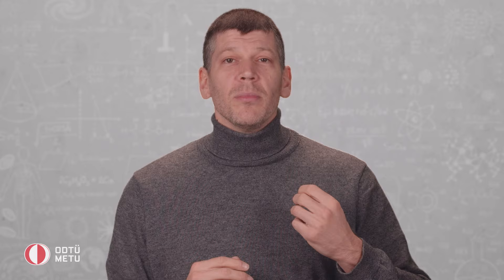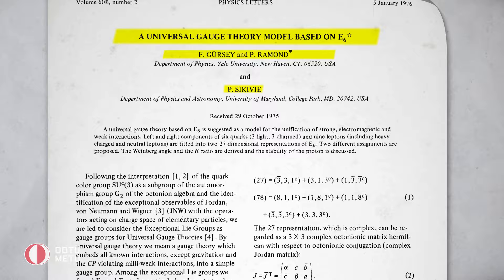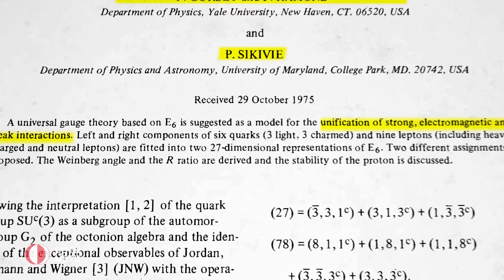In 1975, Gursey published another paper with his colleagues Ramon and Sikivi, in which they proposed the grand unified theory — or, in other words, a theory of everything — based on the exceptional group E-6. A major contribution of this paper was a step towards the construction of unified theories of elementary particle interactions.